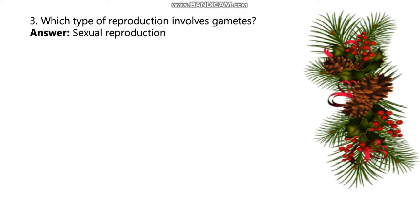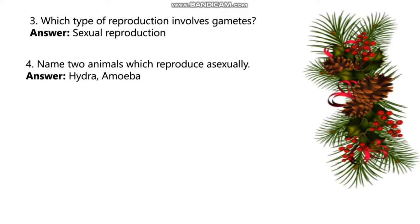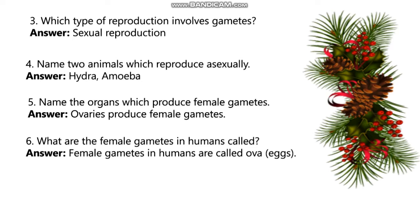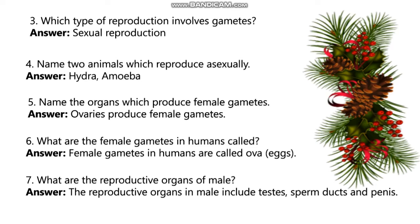Which type of reproduction involves gametes? The answer is sexual reproduction. Name two animals which reproduce asexually — the answer is Hydra and Amoeba. Name the organs which produce female gametes — the answer is Ovaries. What are the female gametes in humans called? The answer is Ova or Eggs. The reproductive organs of males include testes, sperm ducts, and penis.